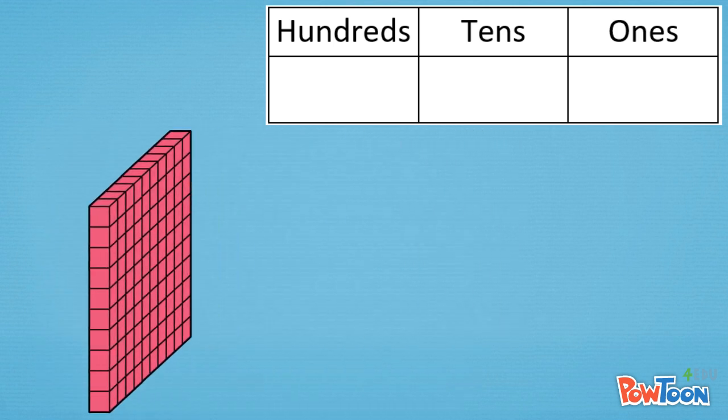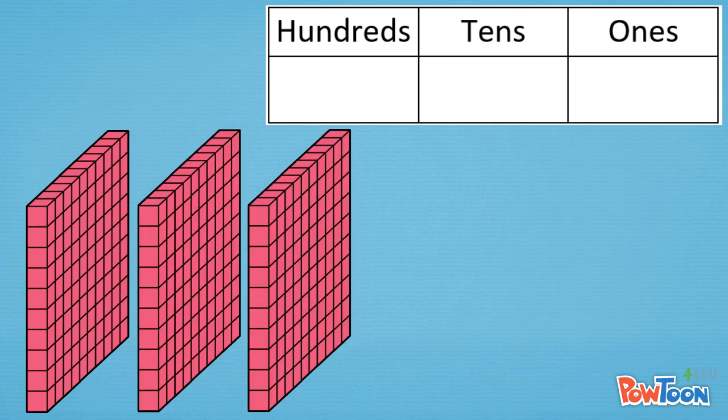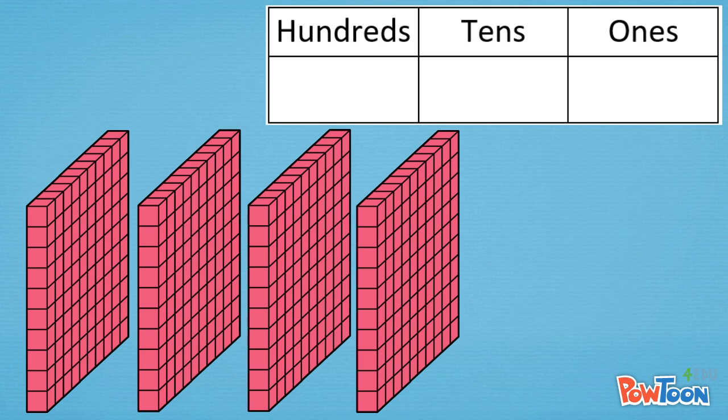Let's count the hundreds. One hundred, two hundred, three hundred, four hundred. How many hundreds are there? Four. How many tens are there? Zero. How many ones are there? Zero. What number does this model show? Four hundred.